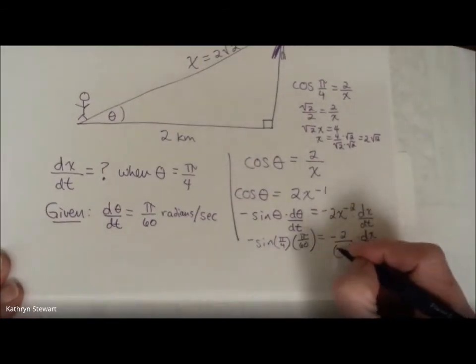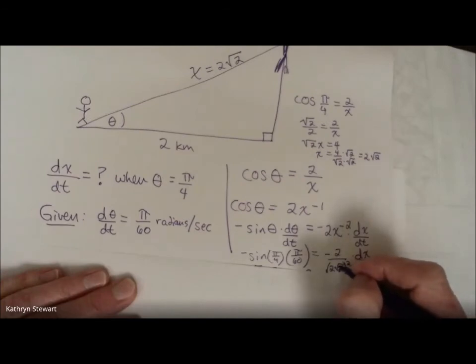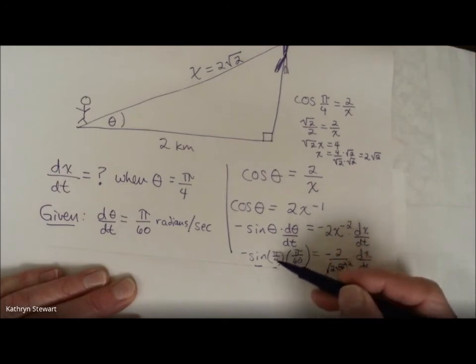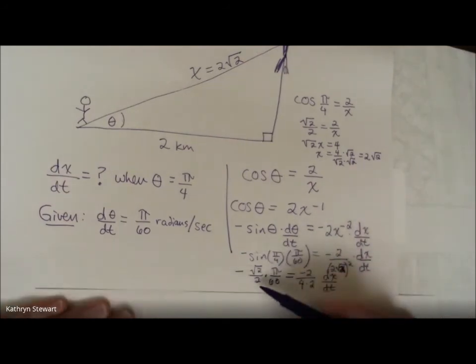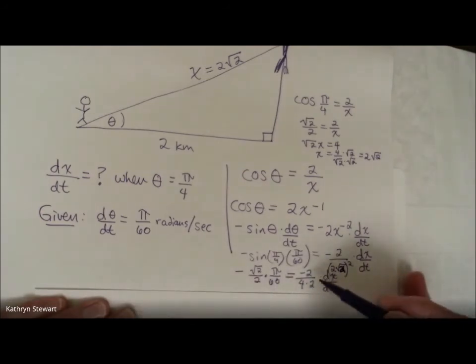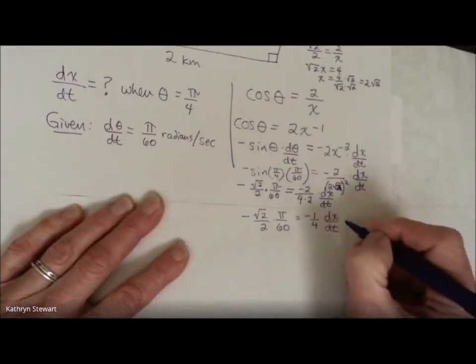Okay, I have a value for x. I can now substitute that into this equation that relates my rates. Whoops, I put an x there. I meant to put a 2 there. Sorry about that. 2 times the square root of 2 squared. Okay, and now all we have to do is figure everything out. Sine of pi over 4 is the square root of 2 over 2, so that's going to be negative square root of 2 over 2 times pi over 60. And you physics people might want to include units as you go. That's fine, if you want to. Let's see, negative 2 over 2 root 2 squared. Well, 2 squared is 4. Square root of 2 squared is 2 dx/dt. And I'm running out of room here a little bit.